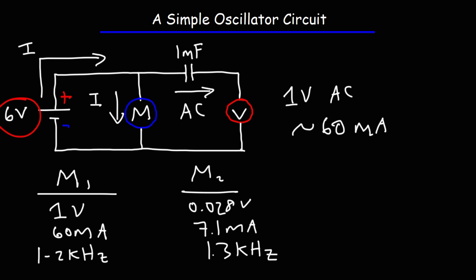So, the voltage, the output voltage, the output current, the frequency, not only depends on the type of motor you use, but also the voltage of the battery that you're using in the circuit.